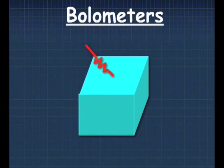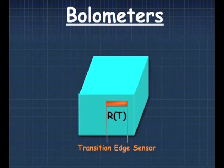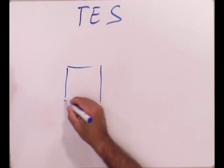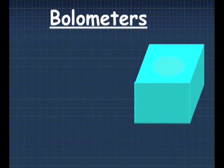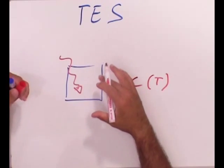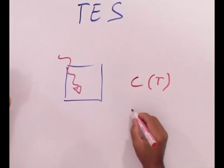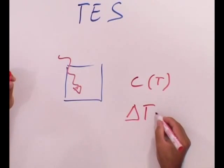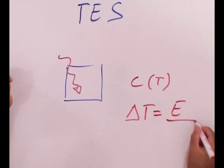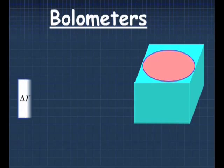Transition edge sensor-based microcalorimeters consist of two parts: generating the excitation and measuring it. A microcalorimeter is constituted by a bulk crystal in which radiation is absorbed. The temperature change in this crystal, delta T, is equal to the incoming energy divided by the heat capacitance of the system.